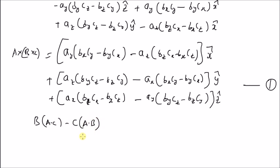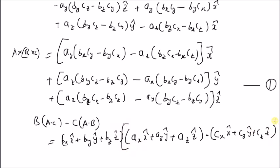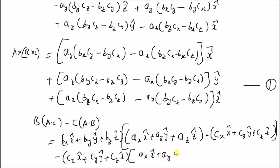The right hand side is equal to, by definition, bx x-hat plus by y-hat plus bz z-hat, times the dot product between A and C. Vector A is ax x-hat plus ay y-hat plus az z-hat, dotted with cx x-hat plus cy y-hat plus cz z-hat. That is the first term — the weight for the first vector. Next, we have minus vector C, which is cx x-hat plus cy y-hat plus cz z-hat, times the dot product between A and B, which is ax x-hat plus ay y-hat plus az z-hat.